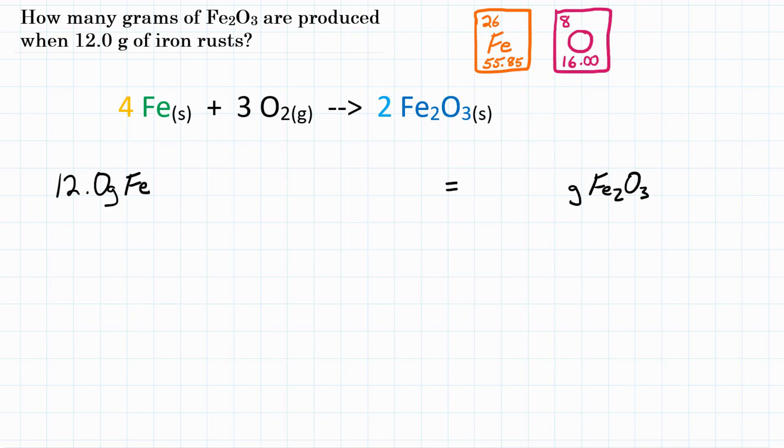So since we're going mass-to-mass, this is going to be three steps, three conversions. So we'll put all those in. And they're conversion factors which are fractions.